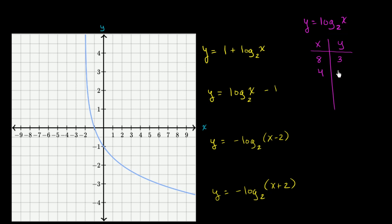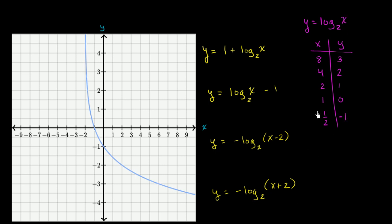Log base 2 of 4 is 2 because 2 squared is 4. Log base 2 of 2 is 1 since 2 to the first power equals 2. When x equals 1, what do I have to raise 2 to to get 1? I raise it to the zeroth power — 2 to the zero is 1. For x equals 1/2, 2 to the negative 1 equals 1/2. For x equals 1/4, 2 to the negative 2 equals 1/4. And for x equals 1/8, 2 to the negative 3 equals 1/8.